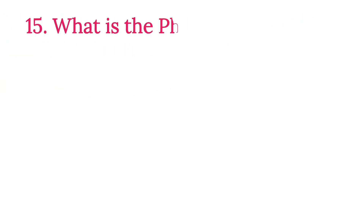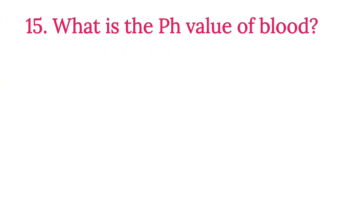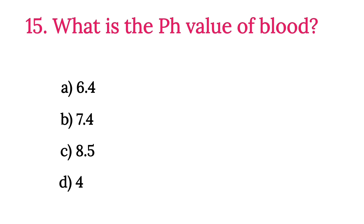MCQ Number 15: What is the pH value of blood? Option A: 6.4. Option B: 7.4. Option C: 8.5. Option D: 4.9. The correct option is Option B, 7.4.